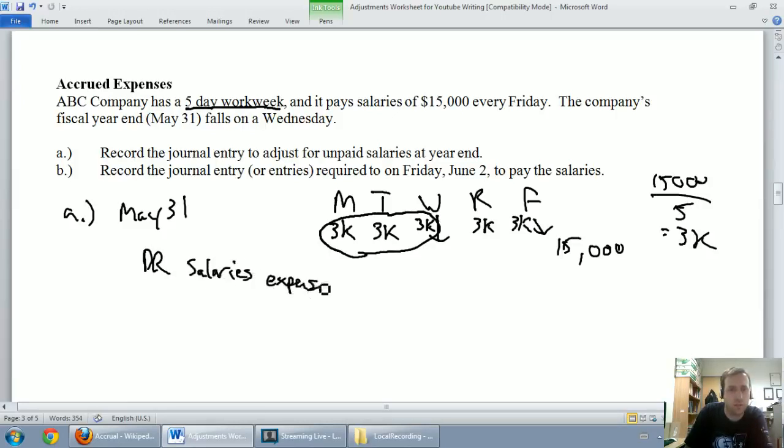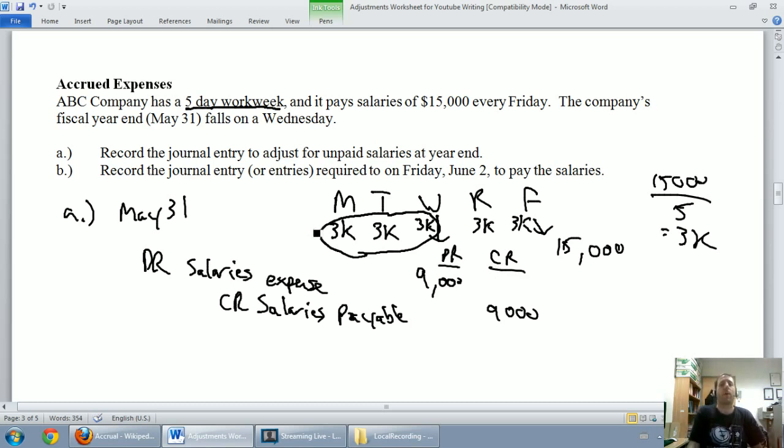Salaries expense for $9,000, and we're going to credit - and this is a tricky one - it's always going to be a payable. We want to do a payable related to the expense, so often it's accounts payable, might be interest payable. In this case it's salaries payable, $9,000. This is our debit and our credit.